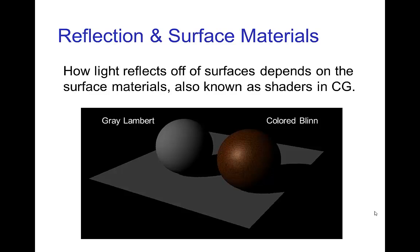In computer graphics these different characteristics are called the shader for a surface. Here we have two basic examples: a gray Lambert surface and a colored Blinn surface. Notice the highlight on the Blinn.